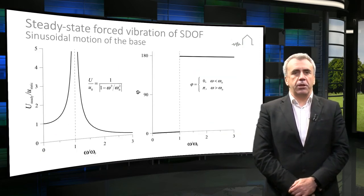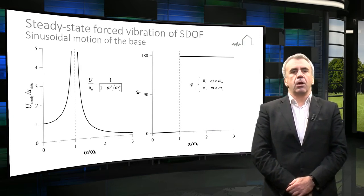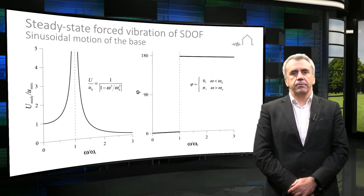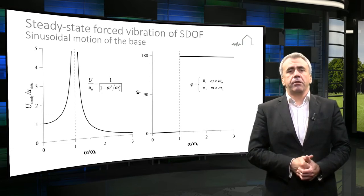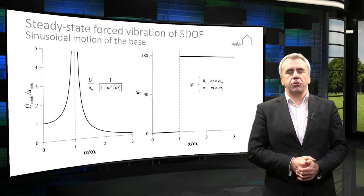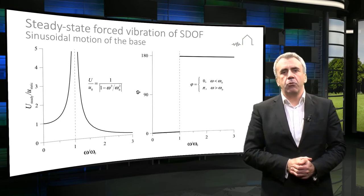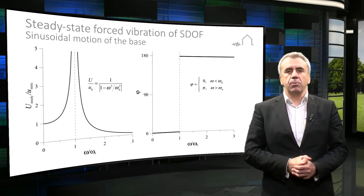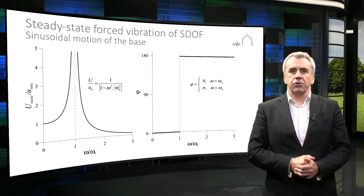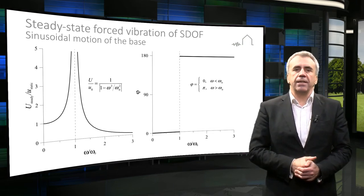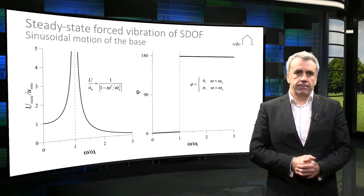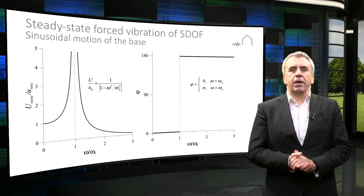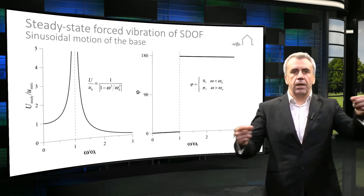In order to oversee the full picture of the dependence of the motion of the structure on the frequency of the base motion, it is instrumental to look at the graphs shown in this slide. The left graph shows the so-called dynamic amplification factor — it tells us how much larger the maximum deflection of the structure will be than the static deflection under a force of the same magnitude. The right graph shows the phase difference, or phase lag, between the motion of the structure and the base. Zero phase lag means co-directed motions, whereas a lag of 180 degrees means counter-directed motions.